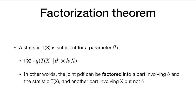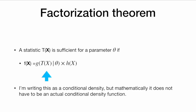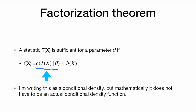Now the factorization theorem tells us how we can find a sufficient statistic. We say that a statistic t(x) is sufficient for a parameter theta if we can factor the joint density into two parts: one part involving our statistic t and our parameter theta, and another part just involving x with no thetas at all. The important thing is that the first part of the function involves only t and theta, not x in any other way.